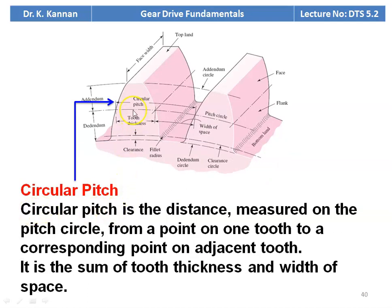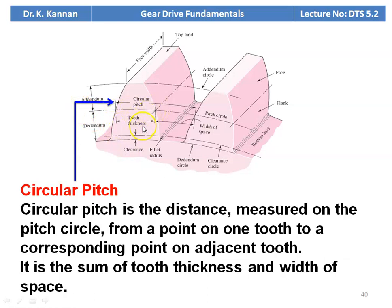Circular pitch: looking at the diagram, circular pitch is the distance from one point on a tooth to the corresponding point on the adjacent gear tooth, measured on the pitch circle. It is the sum of tooth thickness and the width of the space. The thickness is called tooth thickness, and the gap is called width of the space. The sum of tooth thickness and width of the space is called circular pitch.